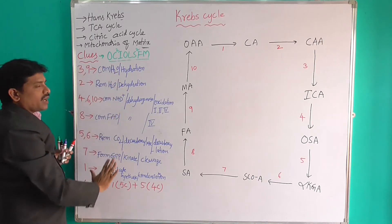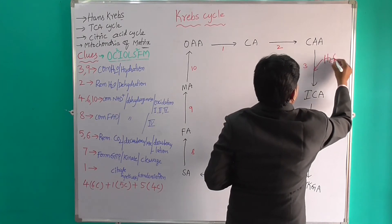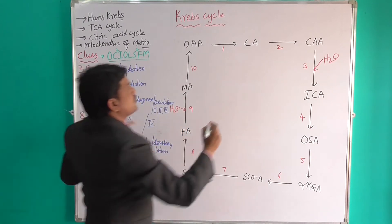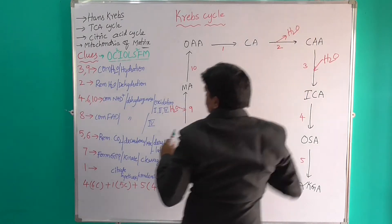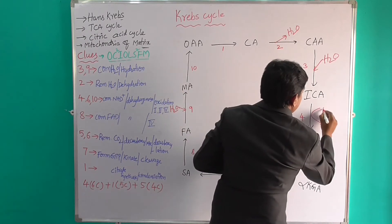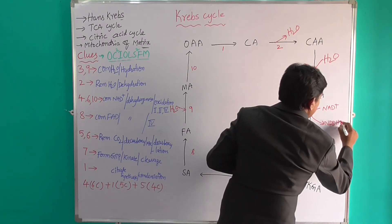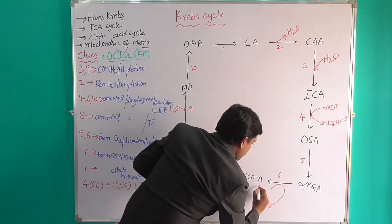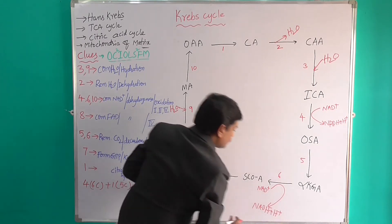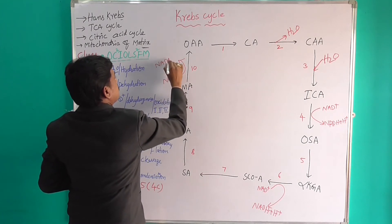Stage 3 and stage 9 are combined with water. Stage 2 is the removal of water — dehydration. Stages 4 plus 6 equals 10 — these are combined with NAD. Stage 6 involves NAD⁺ producing NADH + H⁺. Stage 10 also involves NAD⁺ producing NADH + H⁺. Stage 8 is combined with FAD.